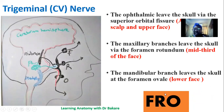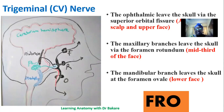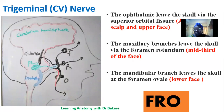Here is a mnemonic: FRO — F for the superior orbital fissure through which the ophthalmic nerve passes to supply the upper face; R for the foramen rotundum through which the maxillary branch exits the neurocranium; and O for the foramen ovale through which the mandibular branch exits the neurocranium to supply the lower part of the face.